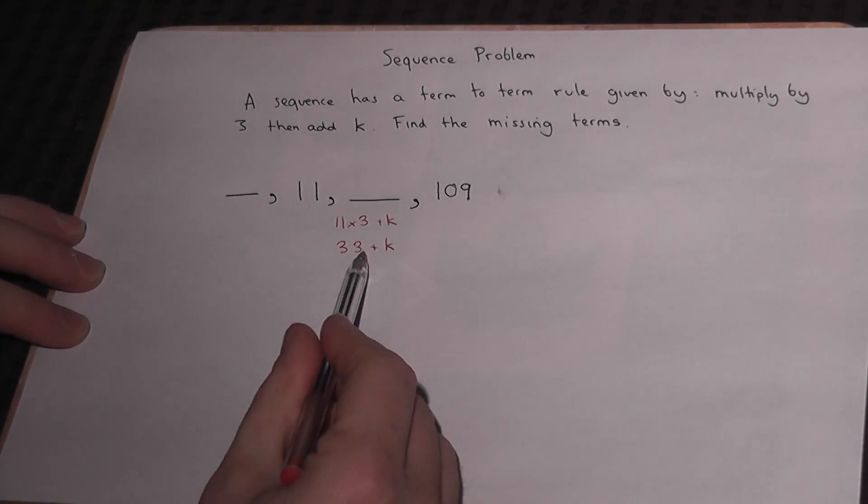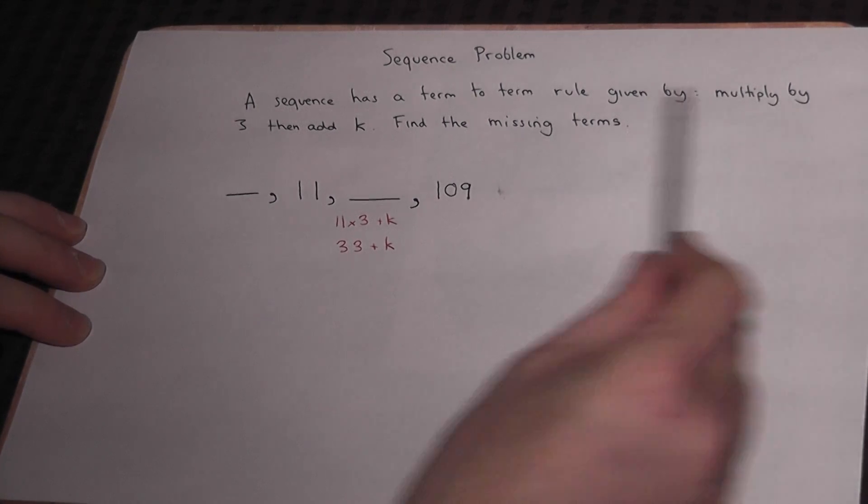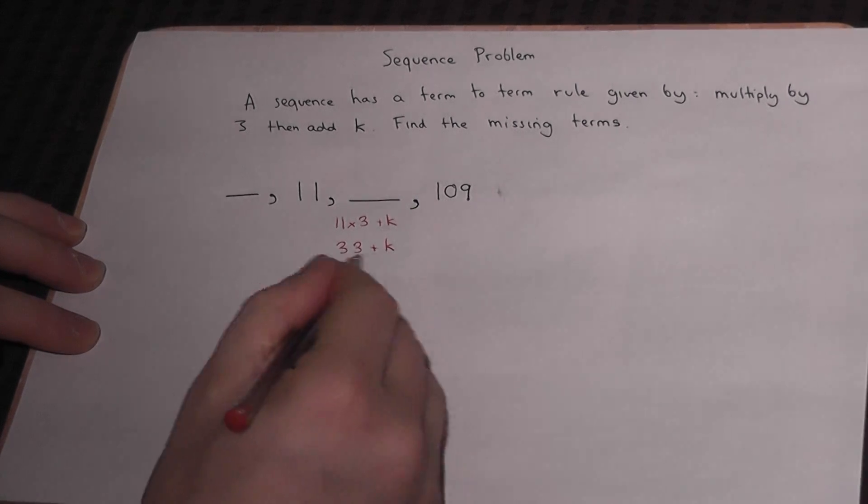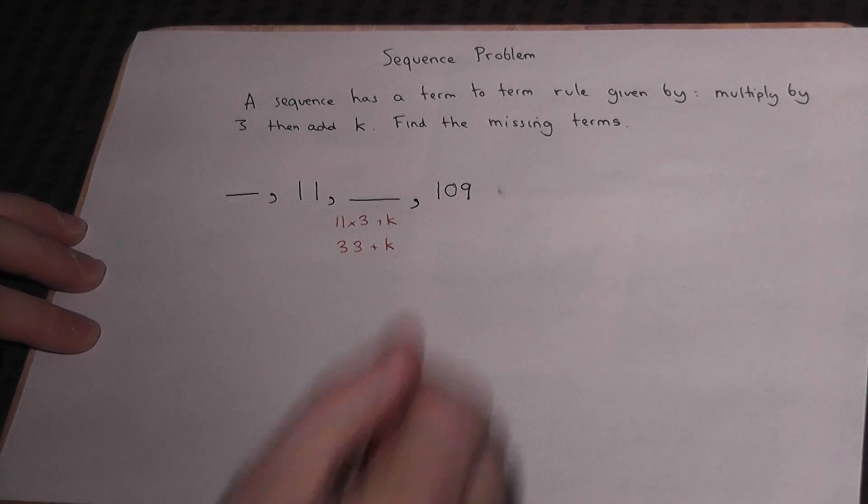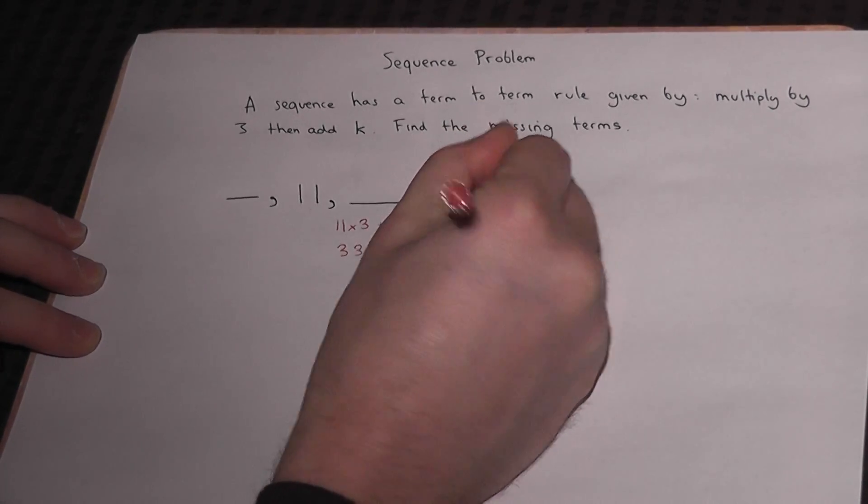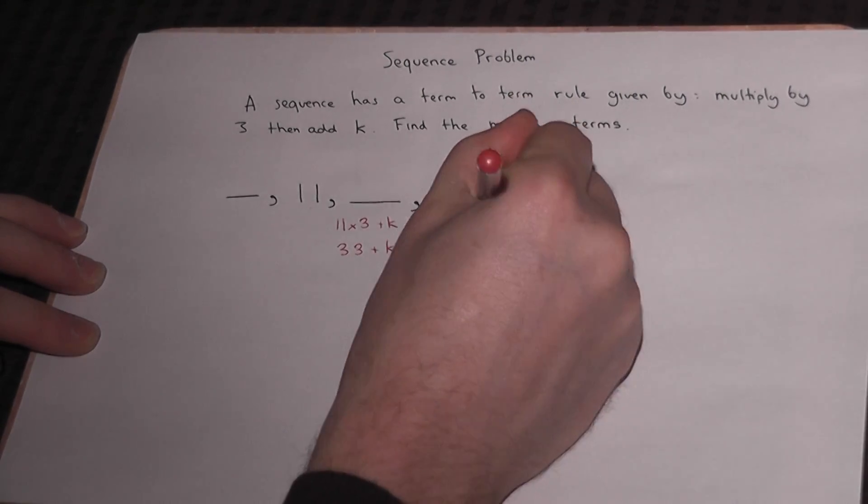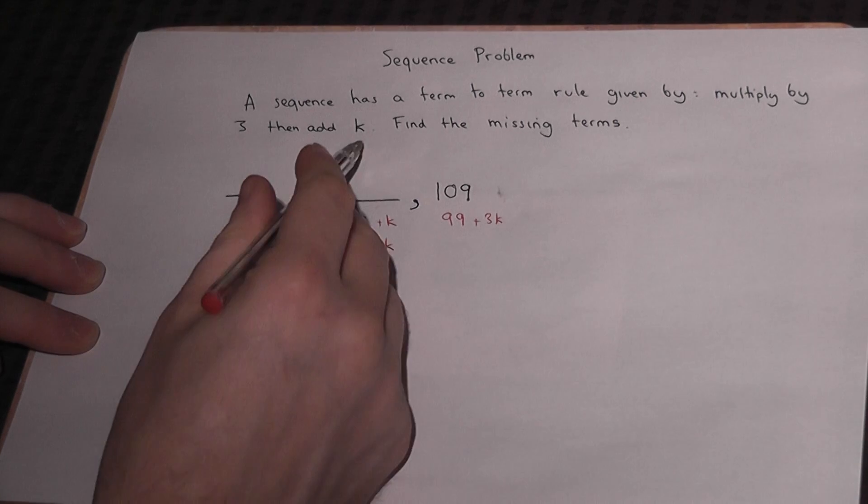Now then, to then get from here to the next term, it's still the same rule, which is times by 3, then add another k. So if we times this by 3, we get 33 times 3 is 99, and k times 3 is 3k. But then we have to add on another k.